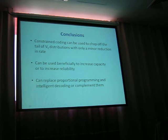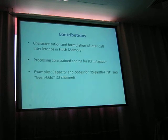So for conclusions, constraint coding can be used to chop off the tail of Vt distributions with only a minor reduction in rate. It can be used beneficially to increase capacity or to increase reliability. And it can replace proportional programming and intelligent decoding or complement them. Thank you.